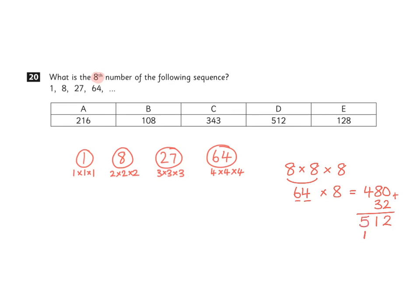So 8 cubed is therefore 512. This would be the 8th term in the sequence, and that's represented by option D. And you can show the answer of D on the answer paper like this.